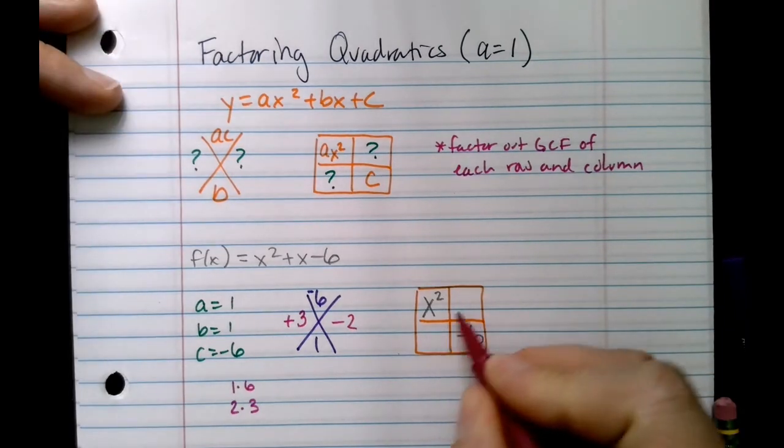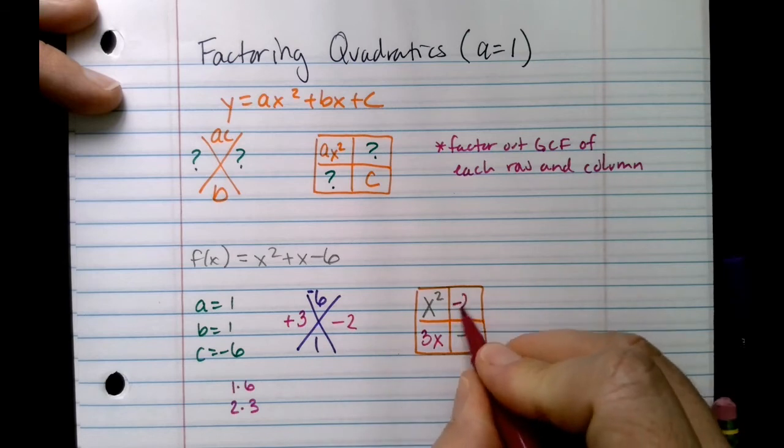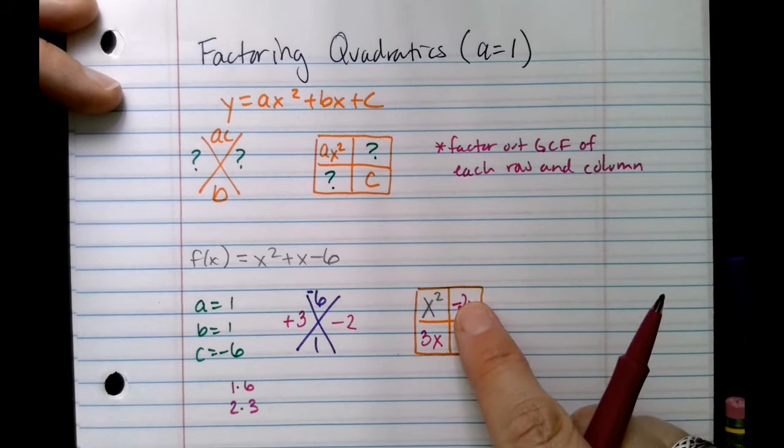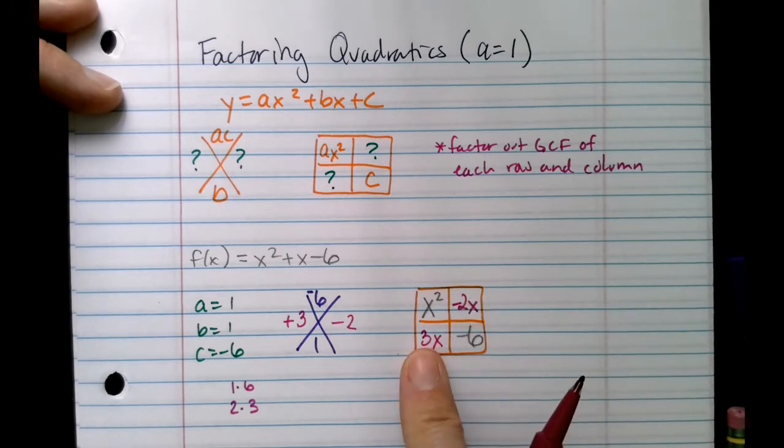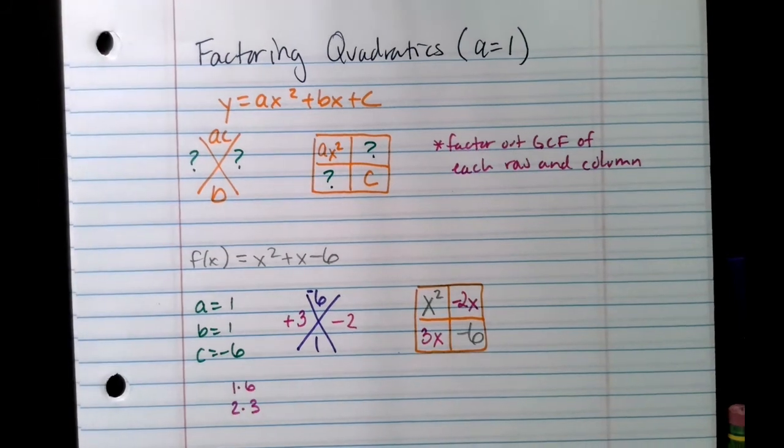When you fill in these middle ones here, these are linear terms. So whatever that number is, you're just going to combine it with an x. It does not matter what order this is. So, for example, I could have put negative 2x in this box and 3x in this box. Now I'm going to factor out the GCFs.